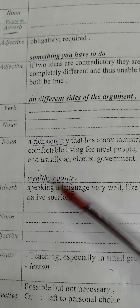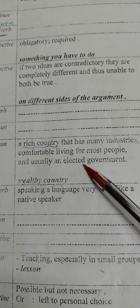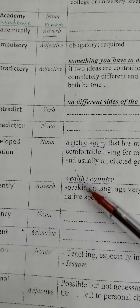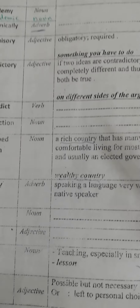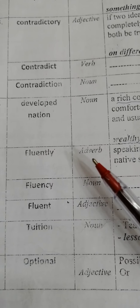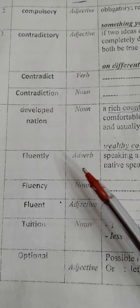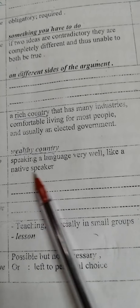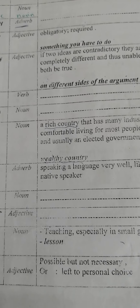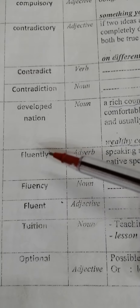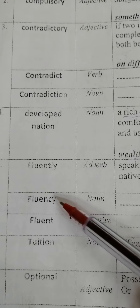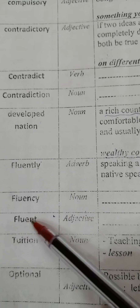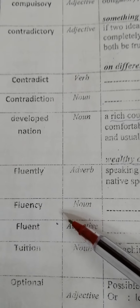A 'developed nation' has a high standard of living and usually an elected government — also meaning a wealthy country, like a rich country. 'Fluently' is an adverb meaning بطلاقة — speaking a language very well, like a native speaker. The noun form is 'fluency' (طلاقة), and the adjective is 'fluent' (طليق في اللغة). Note: when you add -ly to the adjective you get the adverb.